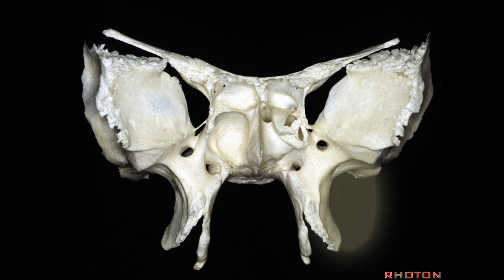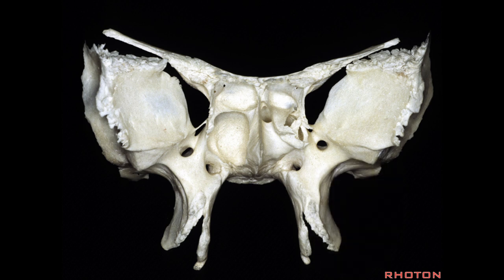The infratemporal fossa opens medially in front of the pterygoid process. The fossa in this area is the pterygopalatine fossa. Superior orbital fissure is also visible here.